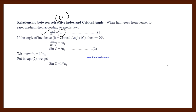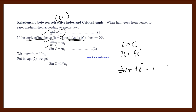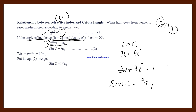When light goes from denser to rarer medium, according to Snell's law: sin i / sin r = 2n1 (or written as 2μ1 in some books). Refractive index can be written as n or μ — both mean refractive index. In CBSE books n is used more, but in Punjab board μ is used more, so Punjab board students should use μ for better results.